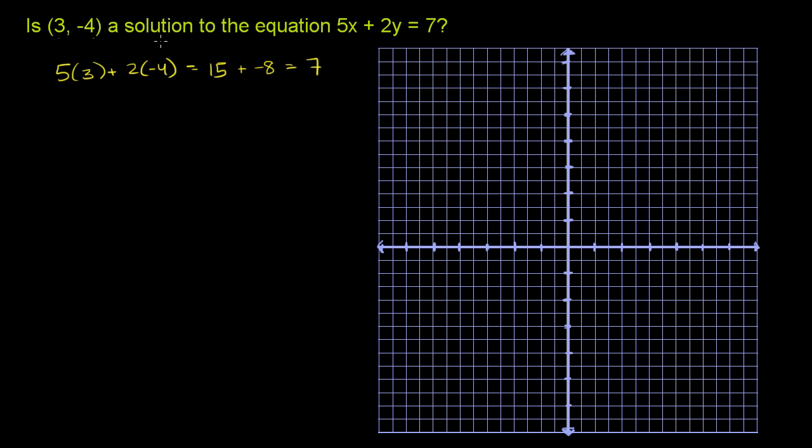So it does satisfy the equation. It is on the line. It is a solution. x = 3, y = -4 is a solution to this equation. So we've essentially answered our question.